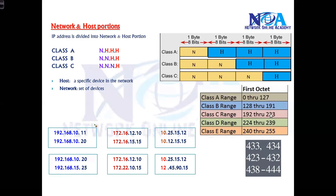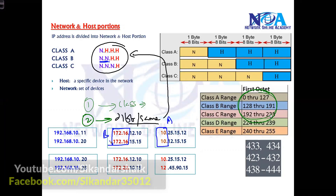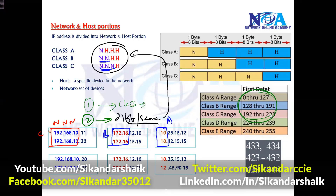In summary: whenever you see any IP address, the first thing is to identify the class by memorizing the ranges. Then determine whether two devices are in the same or different network based on the network portions. In Class A, the first portion must be the same. In Class B, the first two portions must be the same. In Class C, all three portions must be the same.